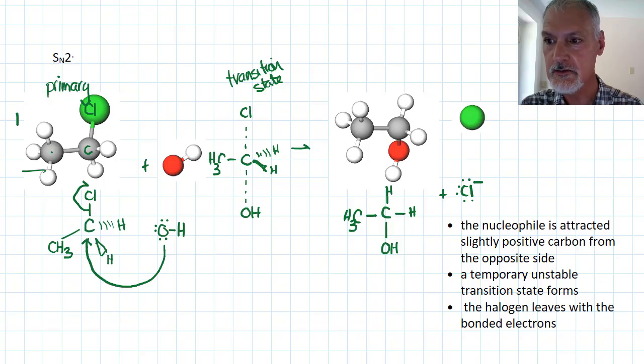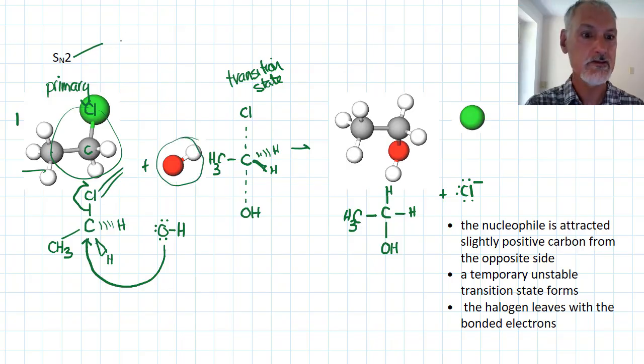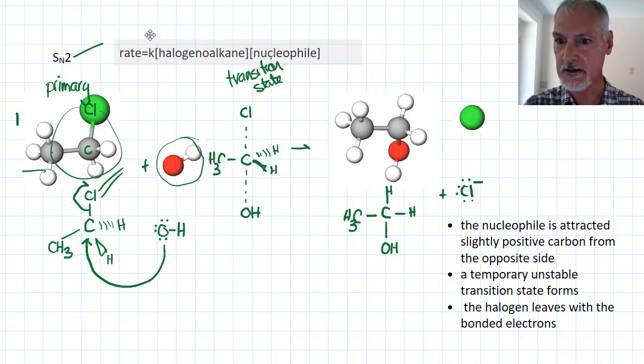Nucleophilic substitution, again, two, because there are two substances involved. This one, the halogenoalkane, and this one, my hydroxide. So the rate determining step has two species in it. And here's a look at what that rate looks like.